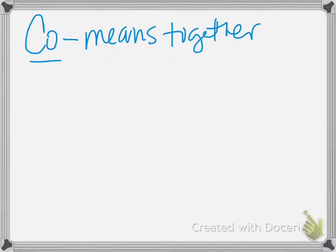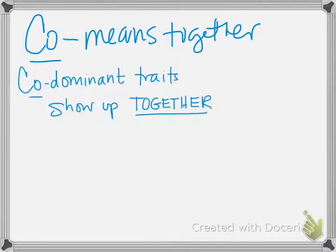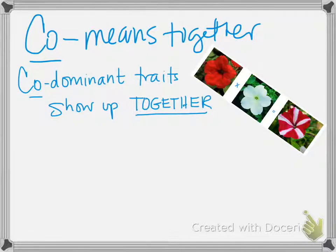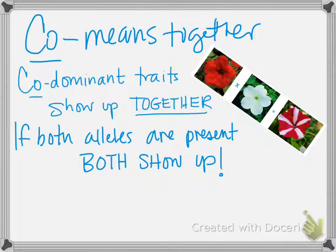As you know, "co" means together. Imagine co-captains of some sort of team — they're sharing their responsibilities of captain, they're captains together. Codominant traits show up together. Neither is dominant; they're both dominant. So in a situation with a codominant trait, if both alleles are present, both actually show up. They're not blended in any way, so you'll get stripes or spots or splashes of color because both show up and they're not blended.